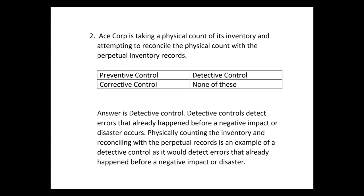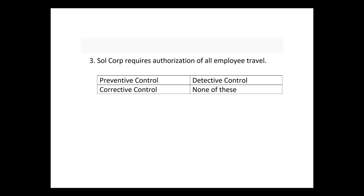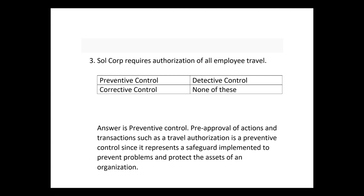Number three: Sal Corp requires authorization of all employee travel — is that a preventive, detective, corrective, or none of these? That's a preventive control. Pre-approval of actions and transactions such as travel authorization is a preventive control, since it represents a safeguard implemented to prevent problems and protect the assets of an organization.